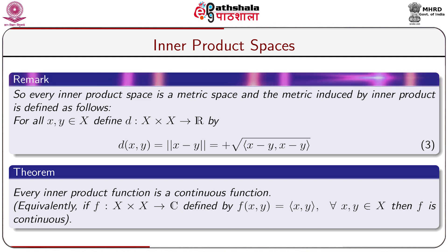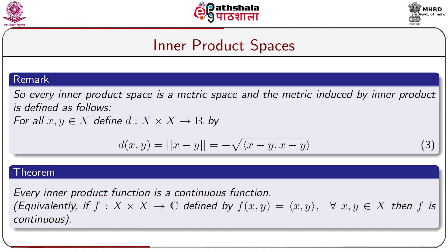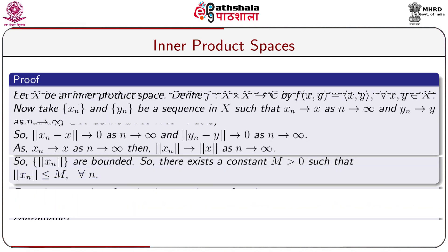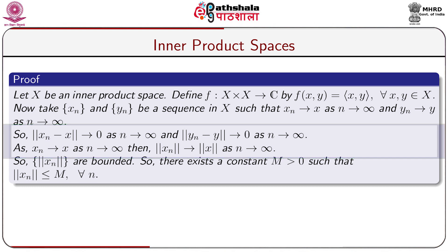We now get a theorem: every inner product function is a continuous function. Equivalently, if f is the function from X cross X to C defined by f(x, y) = ⟨x, y⟩ for all x, y belonging to X, take sequences xn and yn in X such that xn converges to x and yn converges to y as n tends to infinity. Since xn converges to x, norm of xn converges to norm of x because the norm function is continuous.